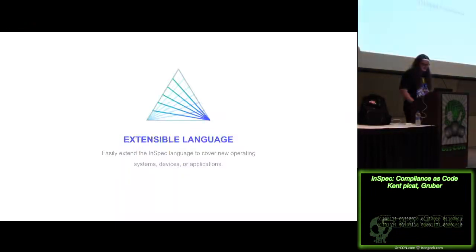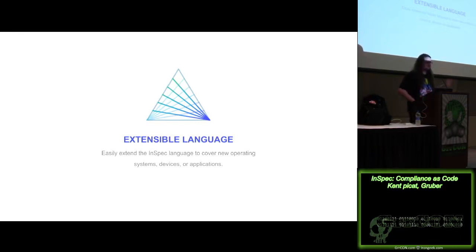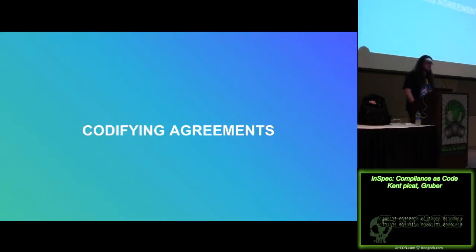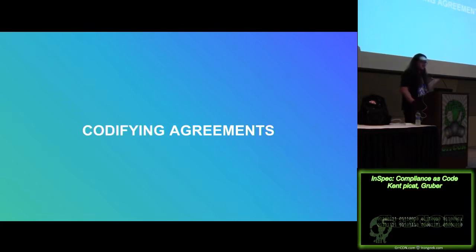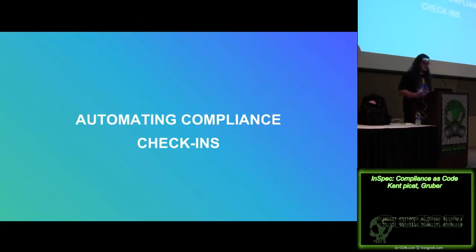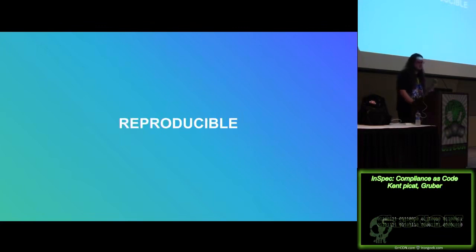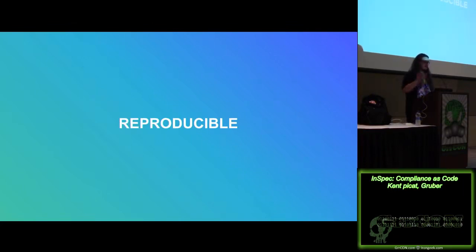Going further into InSpec — it's an extensible language. If things shown aren't what you need, you can always build on top of it. It's great for codifying agreements — if developers always have multi-factor authentication enabled, or if there's an SSH profile used on all systems, it's not just living in a PDF or a wiki. It can exist in the pipeline before you get into production. Automating compliance check-ins is also very interesting, and it becomes reproducible — no longer a manual process of SSHing and potentially making a fat-finger mistake.